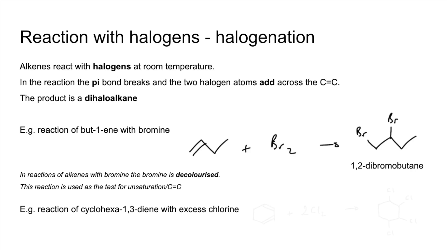So the next reaction looks like that. So again, we've got two double bonds now to react. So we're going to react it with two moles of chlorine. And we get that cyclic halogenoalkane, which is called 1,2,3,4-tetrachlorocyclohexane.